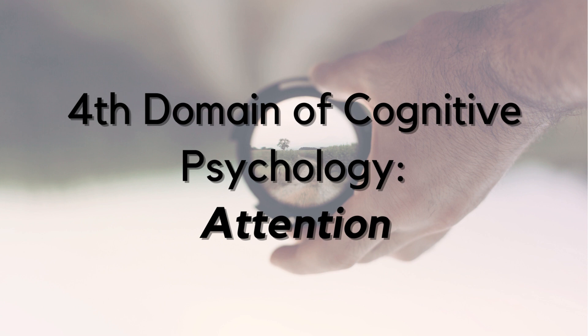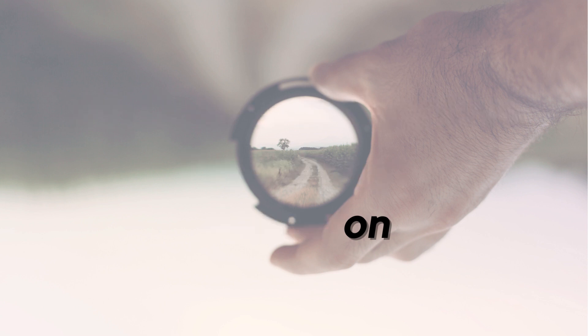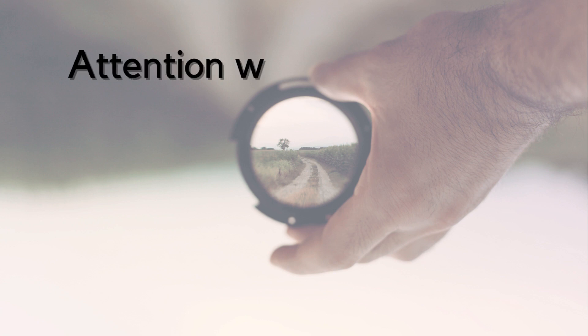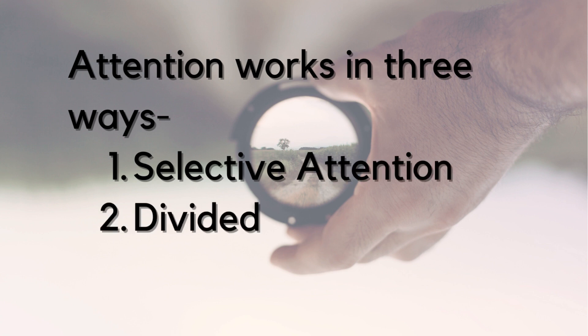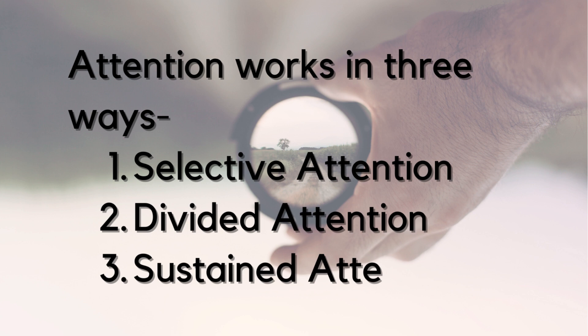Here is how attention works in three ways: selective, divided, and sustained attention. Selective attention is when we choose to focus on one thing while ignoring other things. It's like when you focus on a specific voice in a crowded room, or concentrate on a particular task while tuning out distractions.